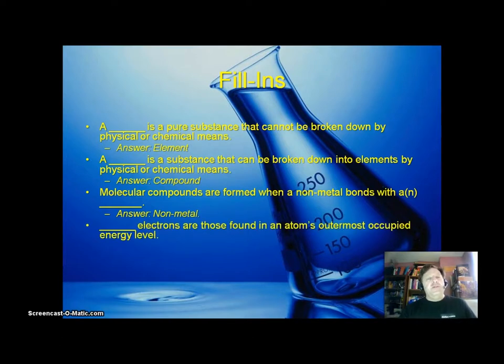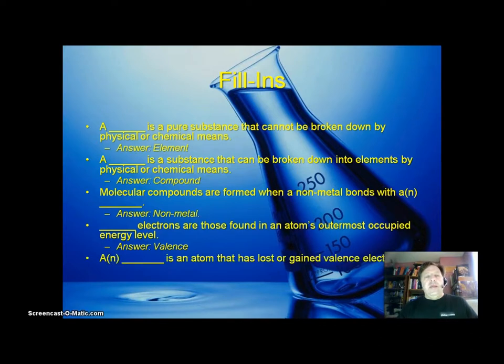Blank electrons are those found in an atom's outermost energy level. And what are those called? Those are valence electrons. A blank is an atom that has lost or gained valence electrons. That's an ion.